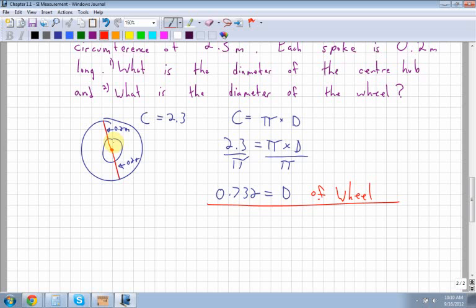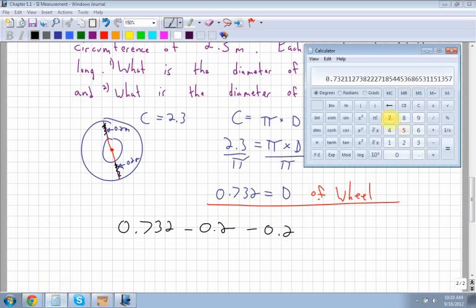What is the diameter of the center hub? The wheel we just found was 0.732. For the center hub, remember each spoke is 0.2 meters long. I have to eliminate the 0.2 on the top and 0.2 on the bottom to be left with the diameter on the inside. So I take 0.732 and subtract 0.2 from the top and 0.2 from the bottom. So I get 0.732 minus 0.2 minus 0.2, which equals 0.332.